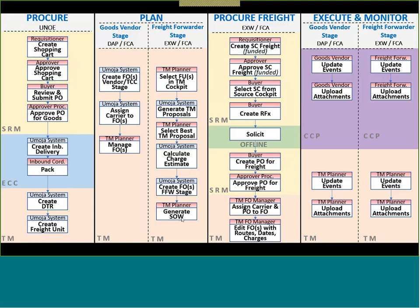In the freight forwarder stage — if we select an X-Works incoterm, or after the handover location if we need to add a freight forwarder to the legs — the TM planner would have to select freight units manually and select the best proposals in TM. We'll see how Umoja automatically calculates the charge estimate, creates the freight forwarders, and then how the TM planner would generate the SOW. This is where things become more interesting to your day-to-day work — where we want to start paying attention to how TM generates the SOW, how to access and download it from each freight order, and then attach it to the freight shopping cart in the Procure Freight stage.